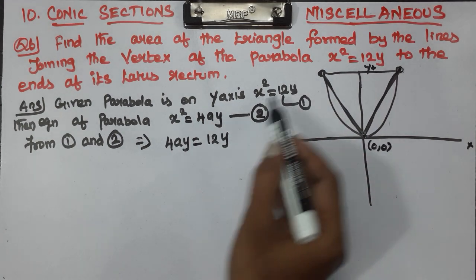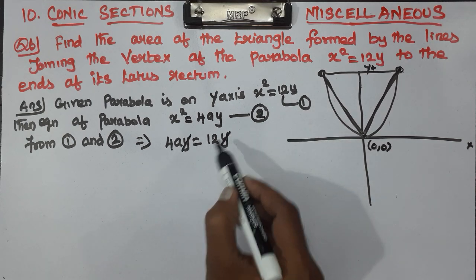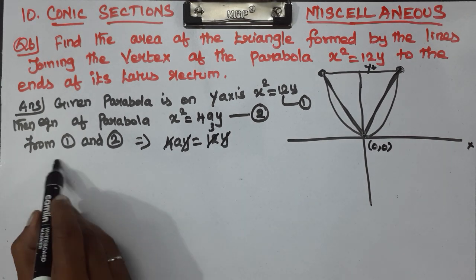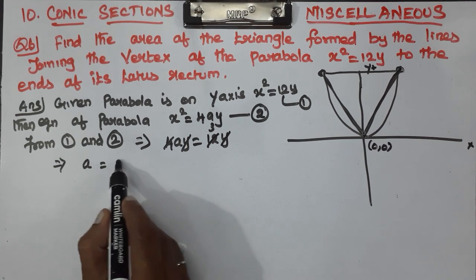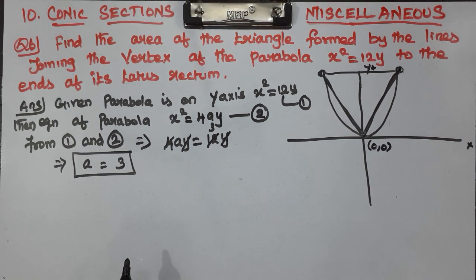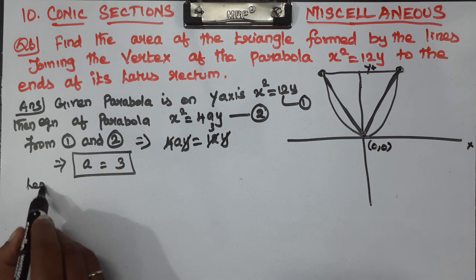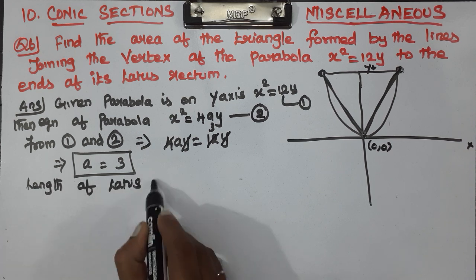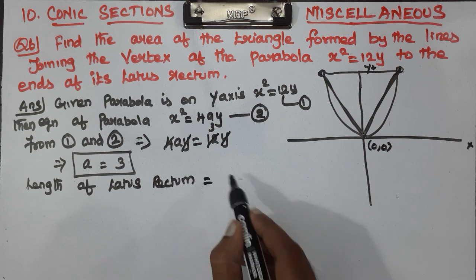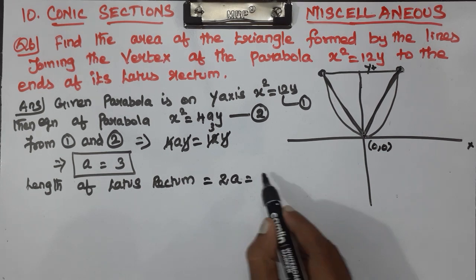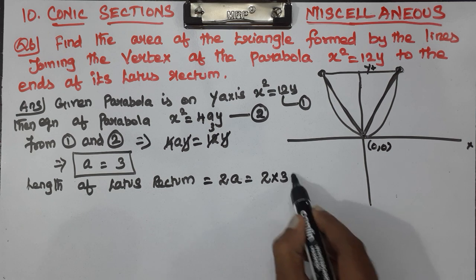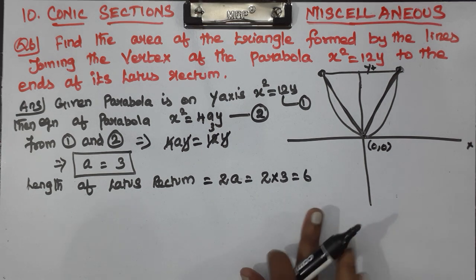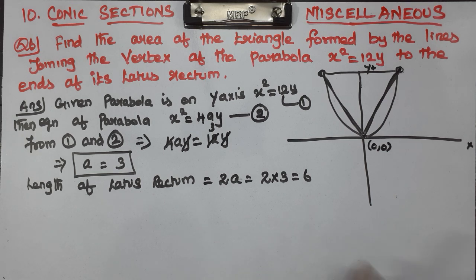If we write 4a = 12, the y cancels. Since 4 × 3 = 12, this implies a = 3. Next, the length of the latus rectum equals 2a = 2 × 3 = 6. So the length of the latus rectum is 6.